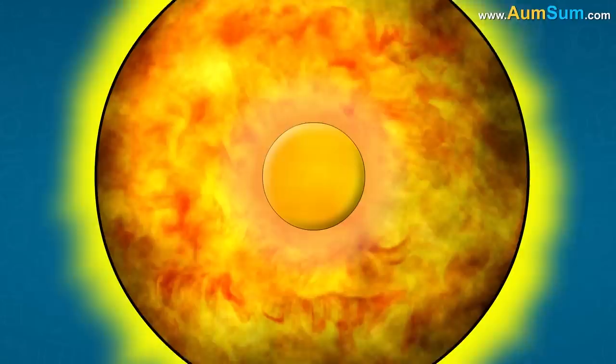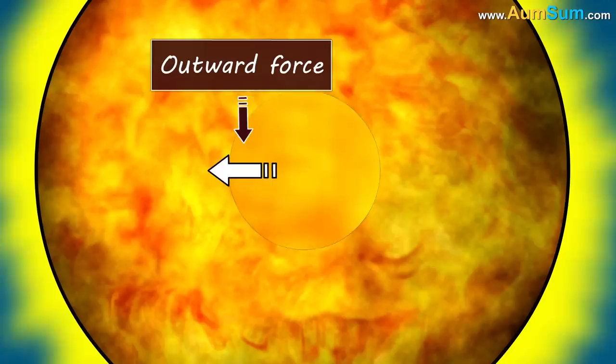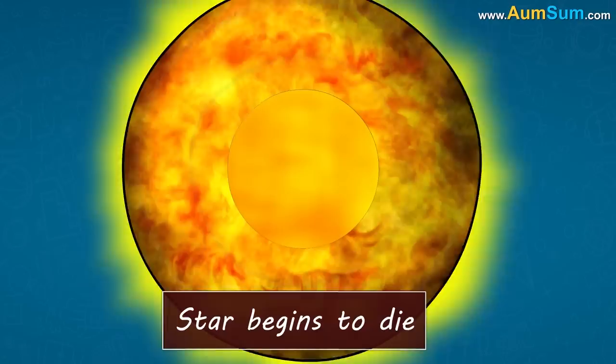These inward and outward forces maintain balance and hold the star together. However, when the star runs out of fuel, there are no hot gases and radiation. Hence, there is no outward force to balance the inward pull of gravity and thus, the star begins to die.